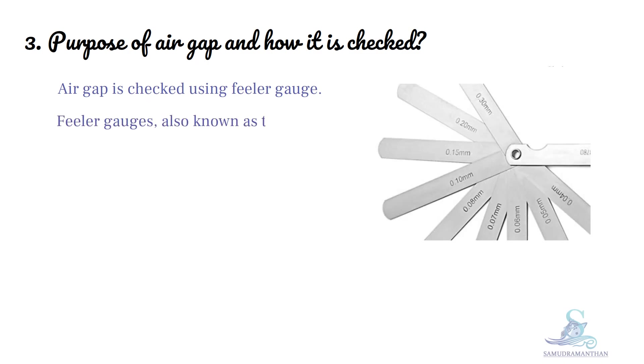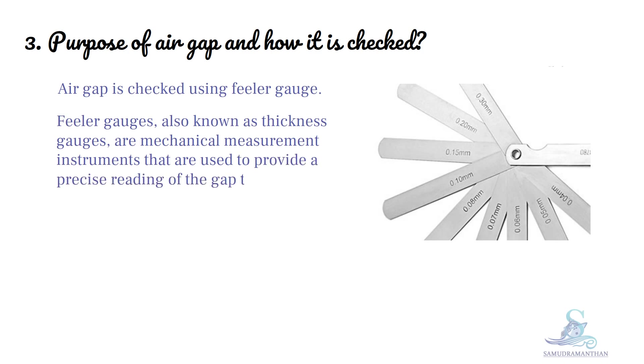Feeler gauges, also known as thickness gauges, are mechanical measurement instruments that are used to provide a precise reading of the gap that exists between two parallel surfaces, such as the clearance between two machine parts or elements.